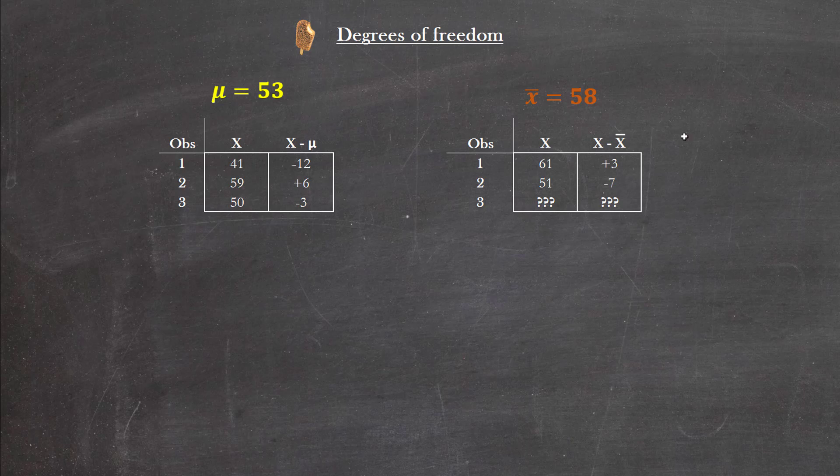Well, unfortunately it can't be whatever it wants. We know that the sample mean is 58, and by definition that sample mean lies right in the middle of this sample, so all of these deviations must sum to zero, of course, meaning that that third deviation must be plus 4 if they're to sum to zero. So plus 3 minus 7 plus 4 will give zero, indicating that this third observation must have been 62.